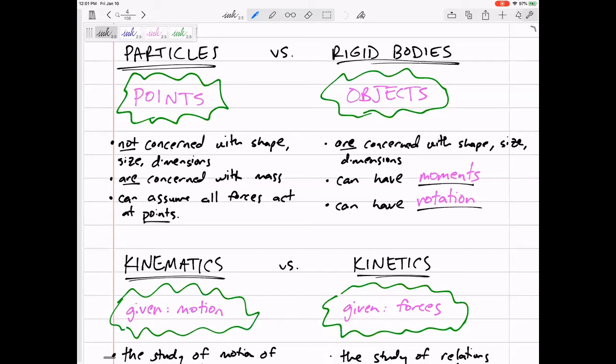Whereas kinetics, we need to look at all the forces, sum the forces to get the acceleration. Then we're going to do everything we did with kinematics. So kinetics just adds an initial step.